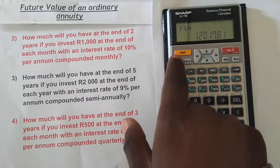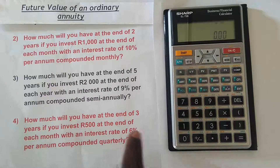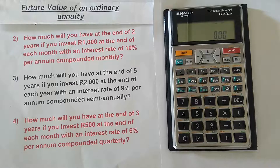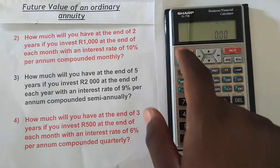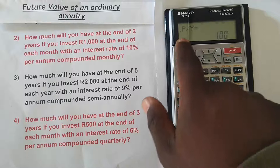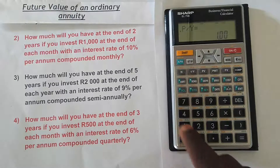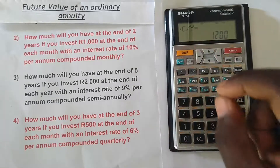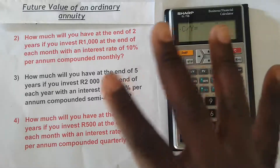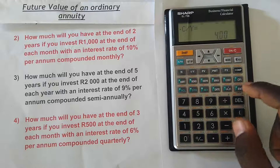Let's do the last example. Clear the memory: second function, alpha, zero, zero. How much will you have at the end of three years if you invest R500 at the end of each month with an interest rate of 6 percent per annum compounded quarterly? The payment occurs monthly and the interest rate is compounded quarterly — they do not coincide. Press second function, then I/Y. Payments per year is 12, so press 12 and enter. Press the down arrow — compounding per year is quarterly, which is 4, so press 4 and enter.